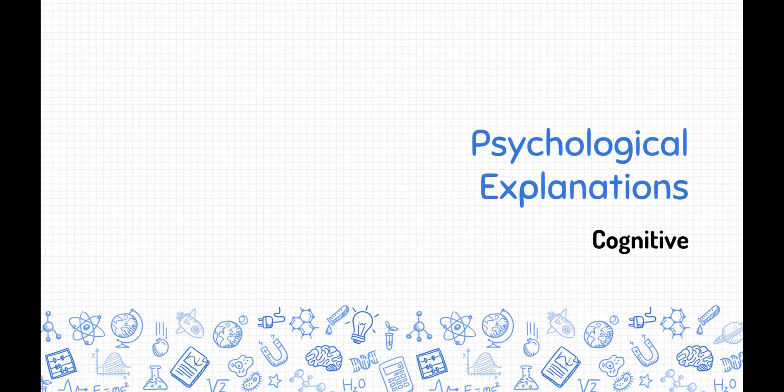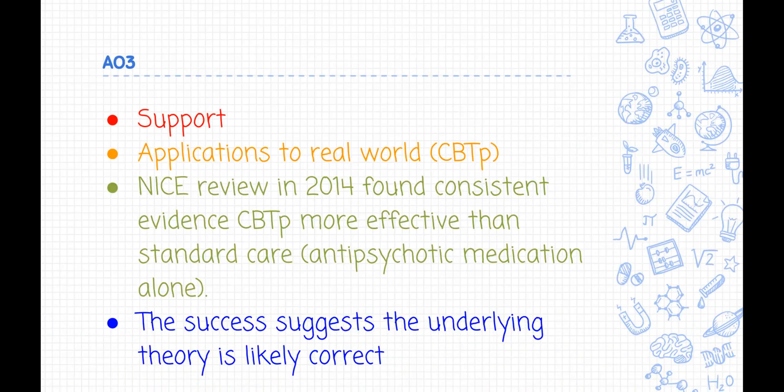Evaluation: the cognitive explanation is useful as it has influenced real-life treatment. CBTp, cognitive behavioral therapy for psychosis, is a therapy in which patients are encouraged to evaluate the conclusions of their delusions and to reality test their faulty beliefs. The NICE review in 2014 found consistent evidence that CBTp was more effective in reducing symptom severity and improving social functioning than standard care, which simply refers to using anti-psychotic medication.